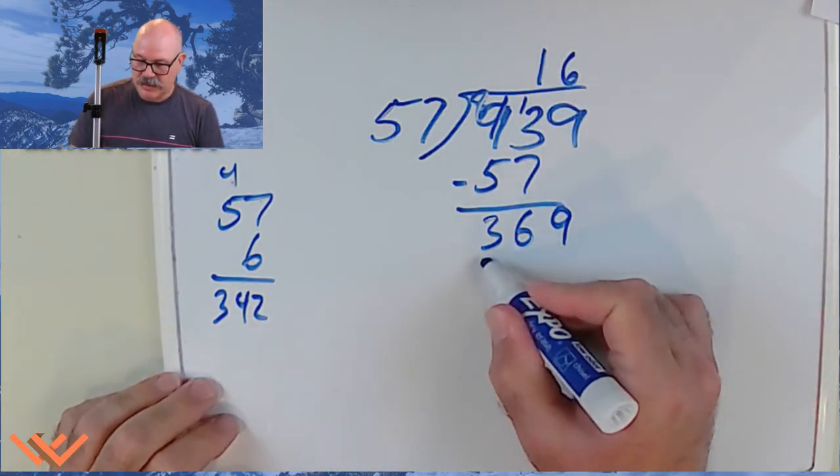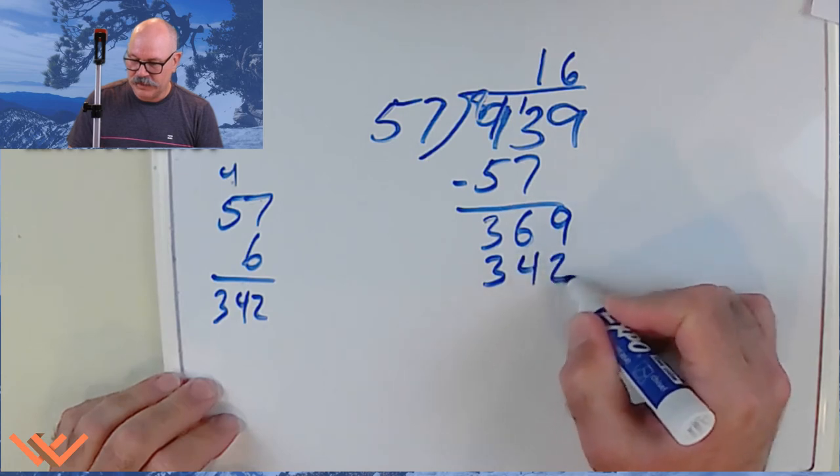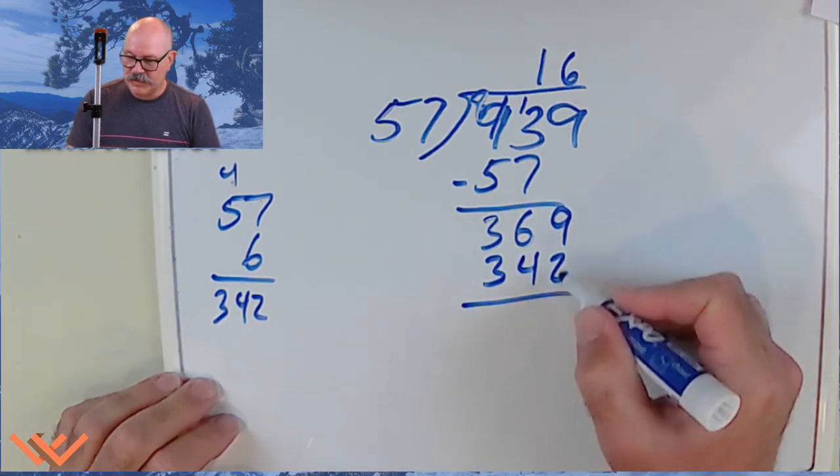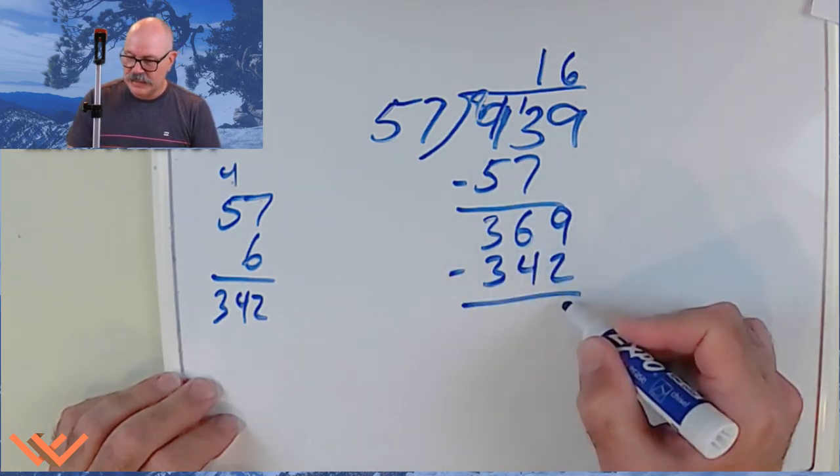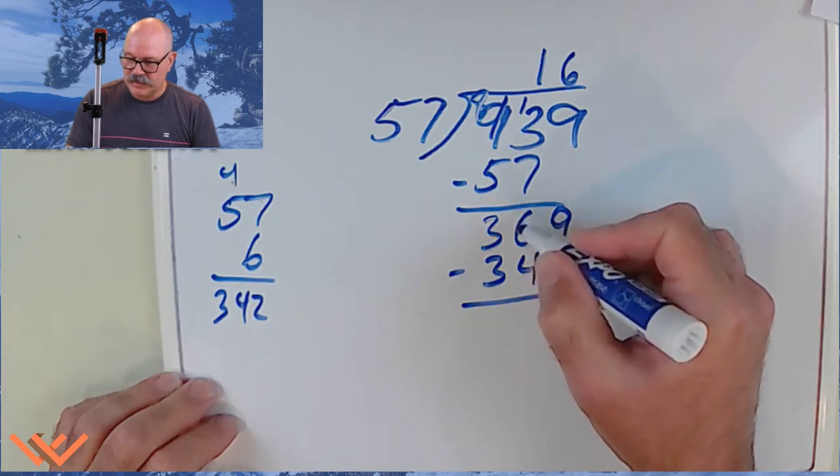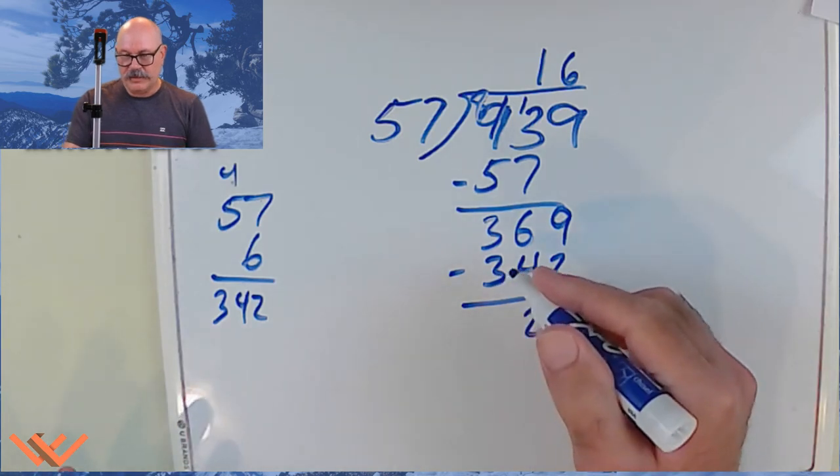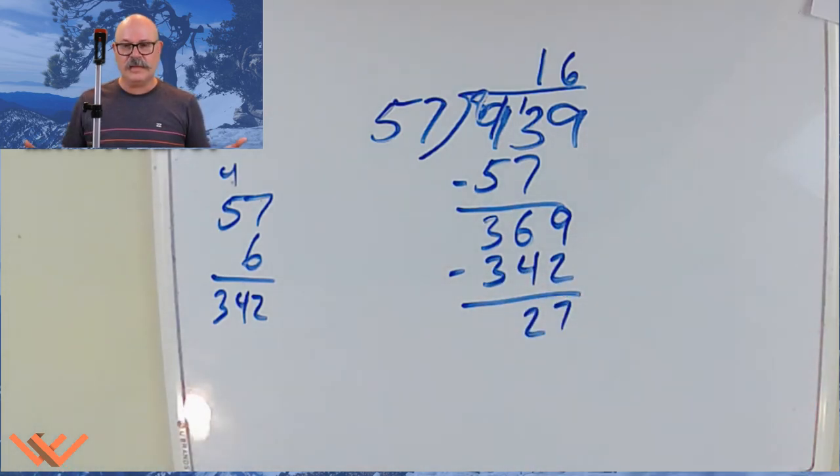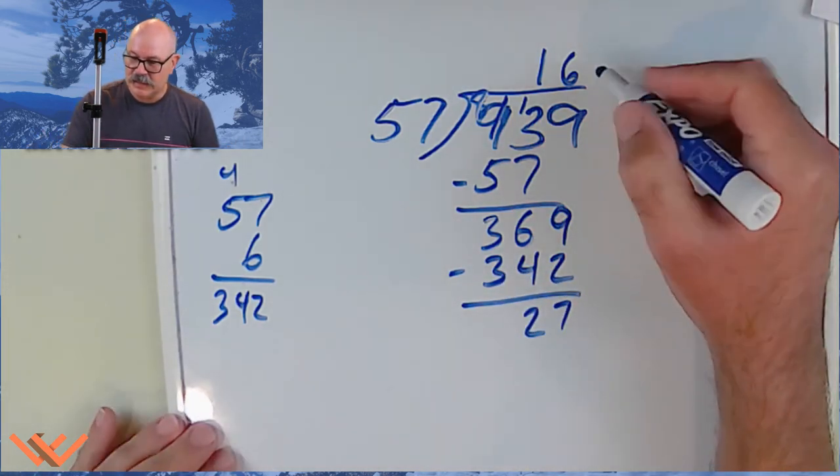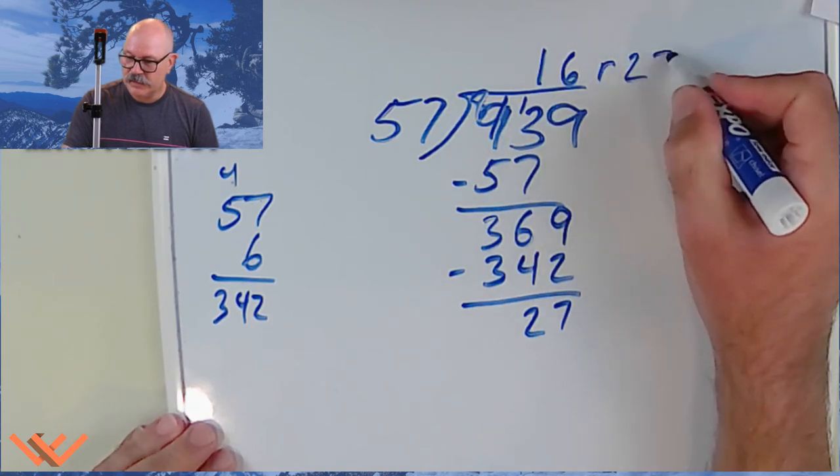Okay. So, there's 6. I'm going to come down here, write down 342. I'm going to do my subtraction. 9 minus 2 is 7. 6 minus 4 is 2. 3 minus 3 is 0. So, we just leave it at 27.